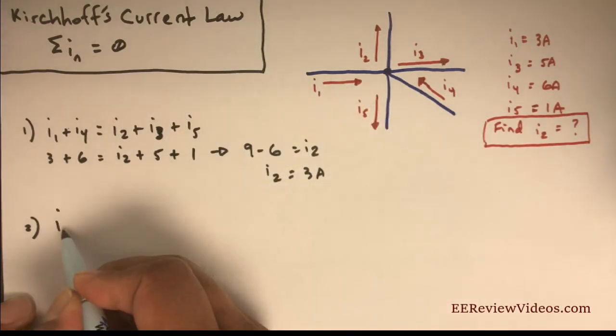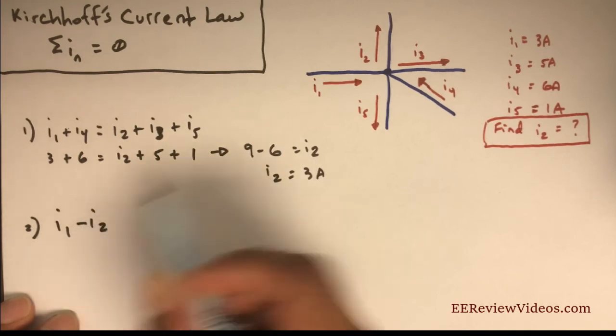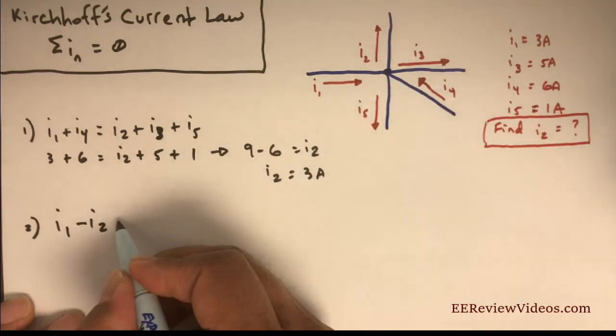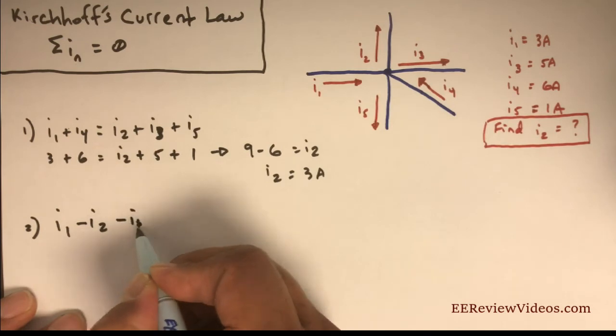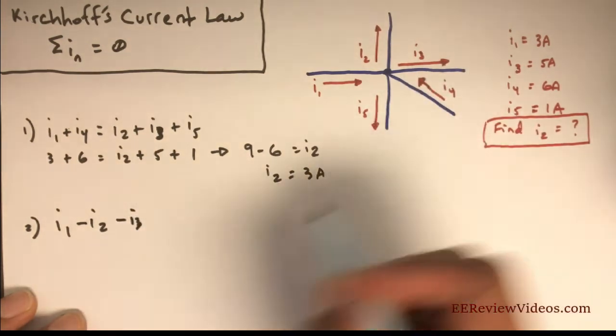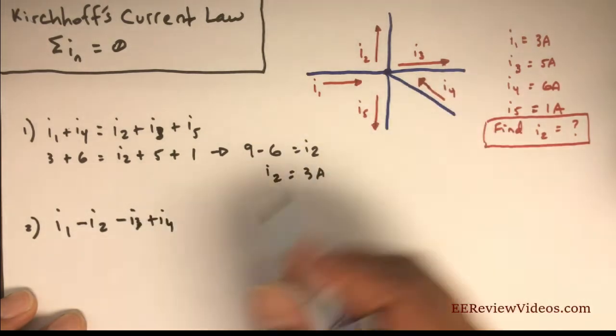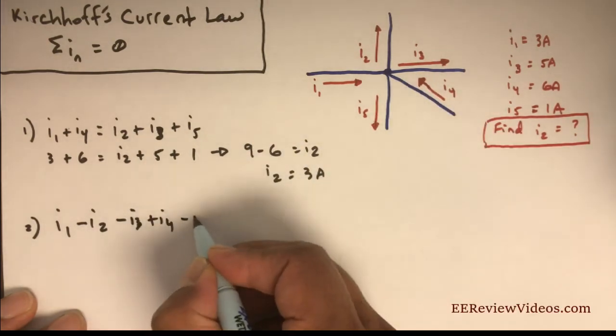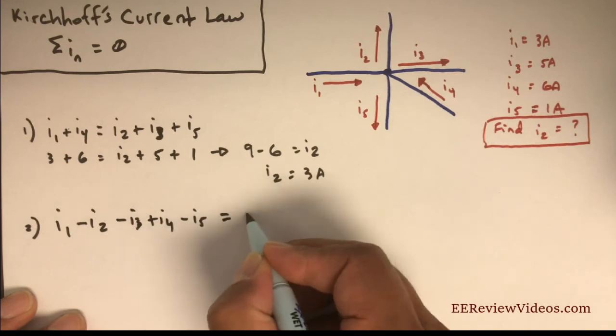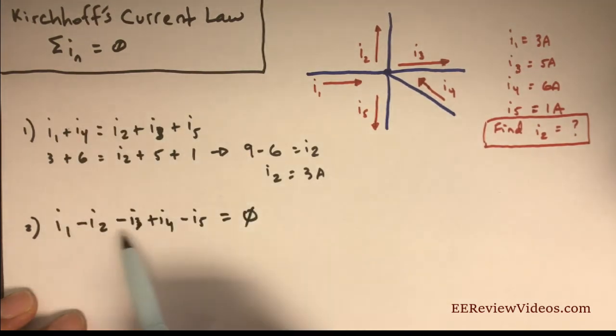If we say that positive direction is going into the node, then we have I1 minus I2 because that's a current leaving, minus I3 because that's a current leaving, plus I4 because that's a current entering, minus I5. That sum equals zero, just like our equation. We sum up all the currents at that node, and that should equal zero.